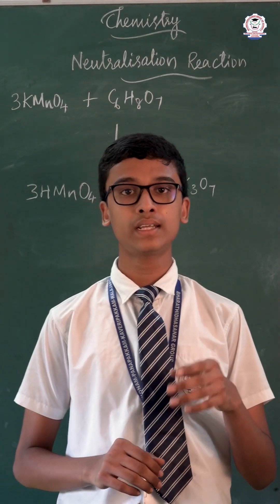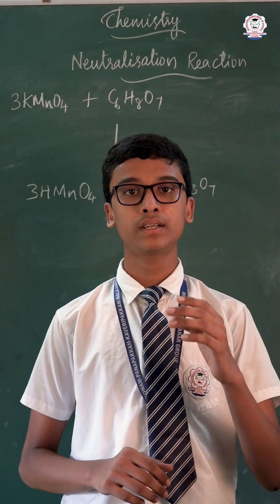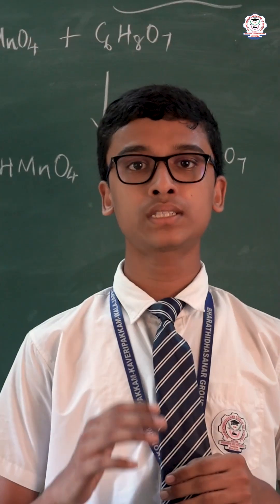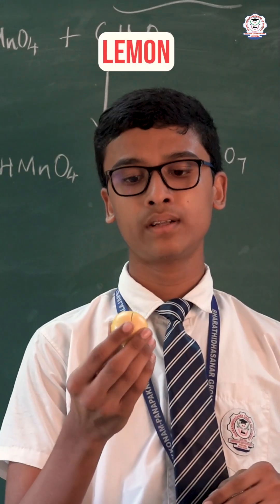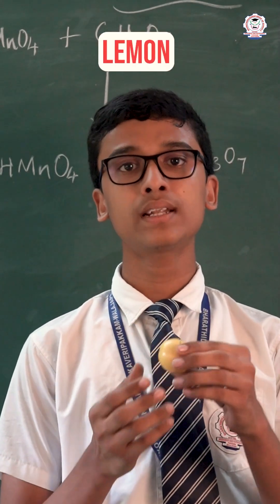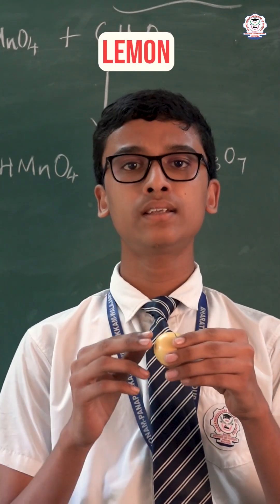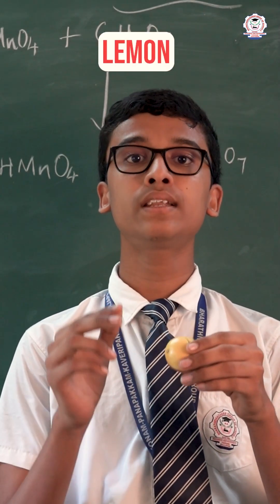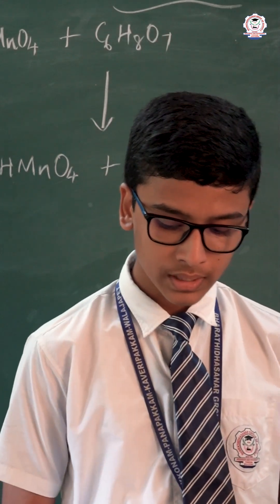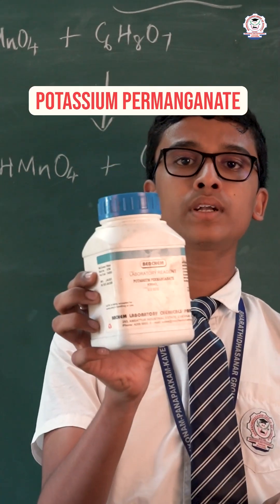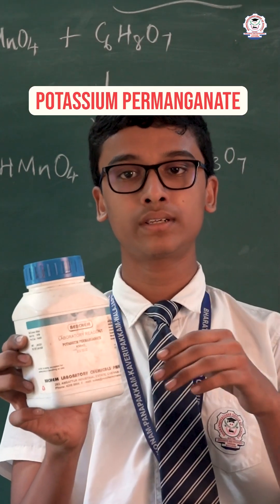Let us see an experiment for neutralization reaction. For this experiment, I am going to take a lemon. We know that lemon contains citric acid, so it is acidic in nature. I am also going to take potassium permanganate, which is basic in nature.